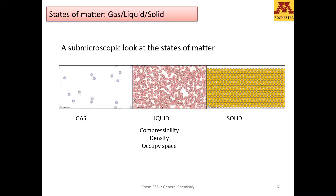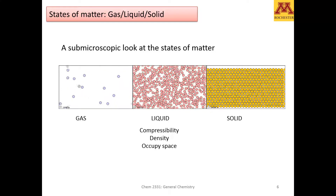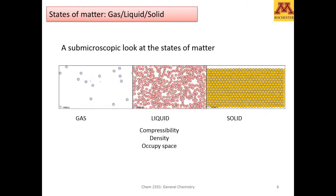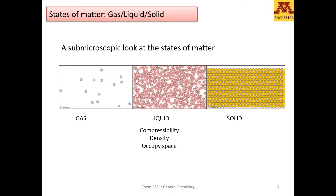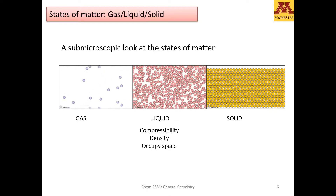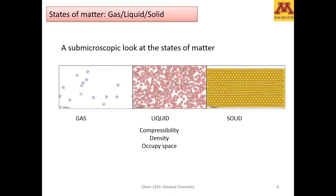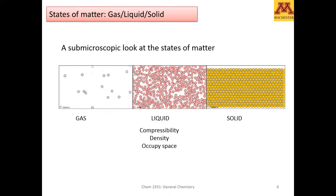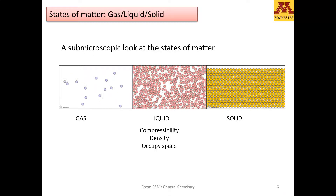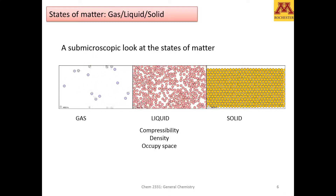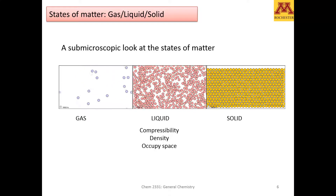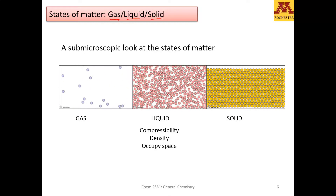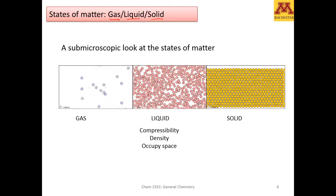Before we talk about the classification of matter, it may be important to remind ourselves what are the three main states of matter. This is something that all of you may be familiar with. The three different states of matter are gas, liquid, and solid.